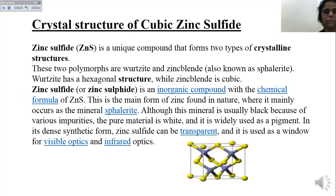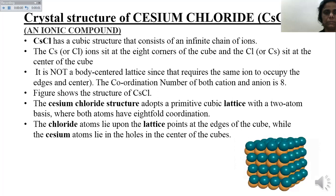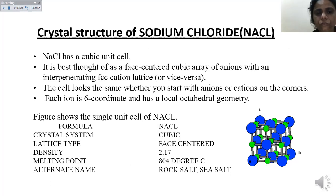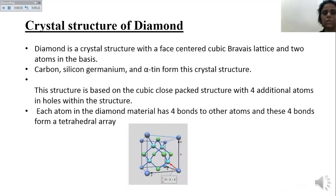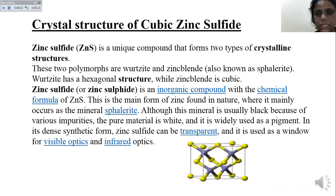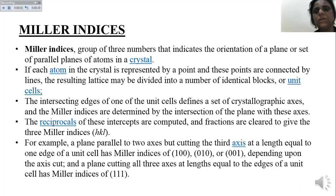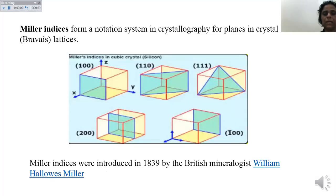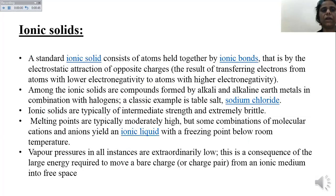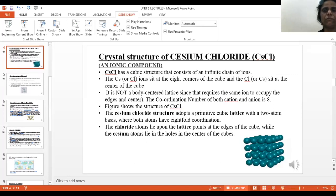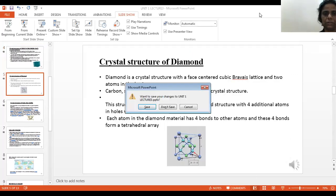Let's revise from the beginning. Today we discussed: the crystal structure of sodium chloride, the crystal structure of cesium chloride which is body-centered cubic, the crystal structure of diamond, and the crystal structure of cubic zinc sulfide - all showing different types of bonding. Then Miller indices, which show the movement of planes within the crystal. Then bonding in solids - four types: covalent bonding, ionic bonding, metallic bonding, and weak intermolecular bonding. Alloys are added to strengthen metallic bonds.